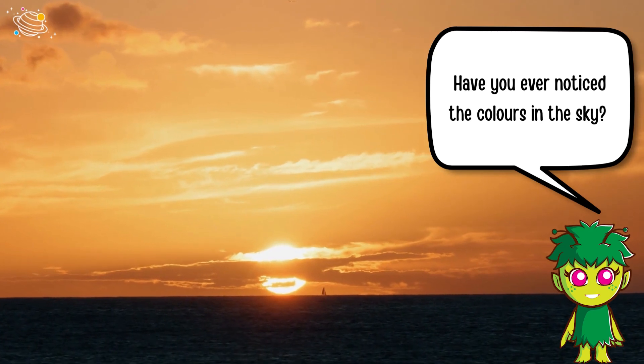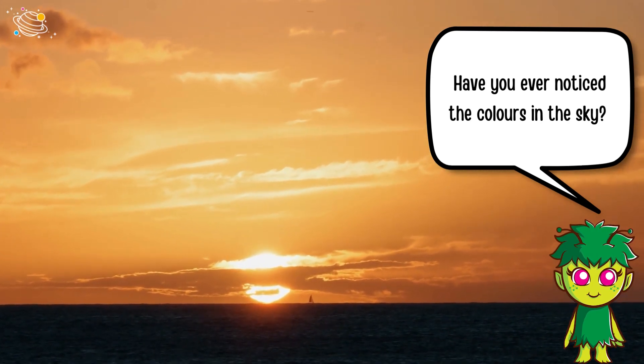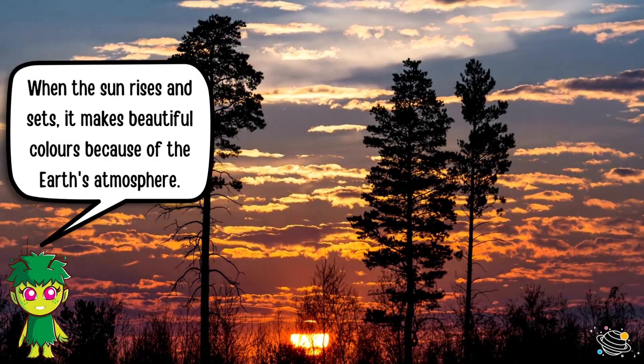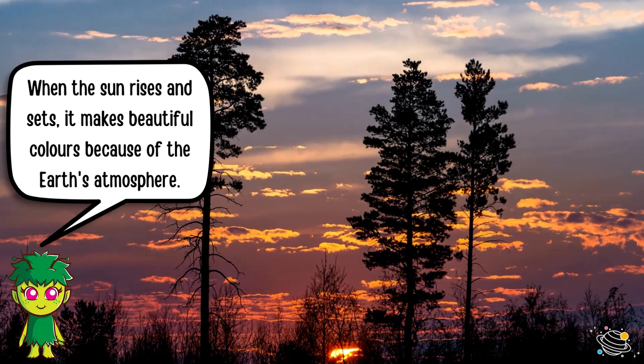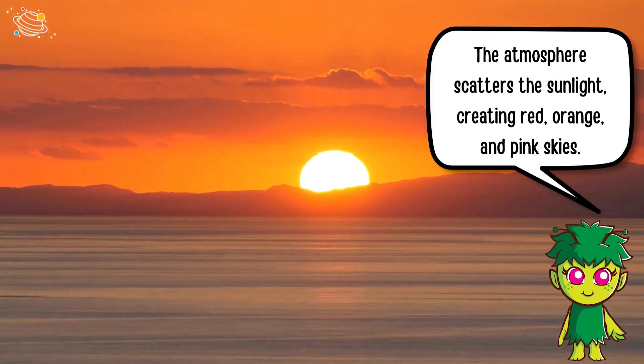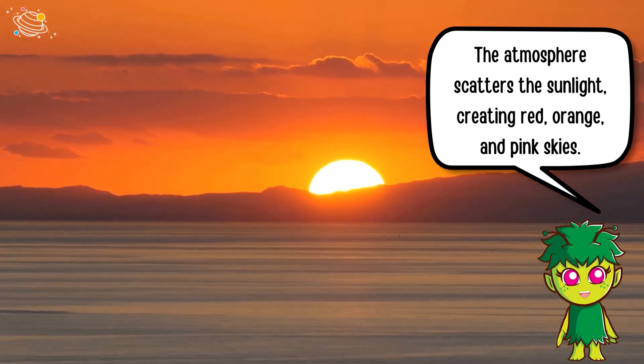Have you ever noticed the colors in the sky? When the sun rises and sets, it makes beautiful colors because of the earth's atmosphere. The atmosphere scatters the sunlight, creating red, orange and pink skies.